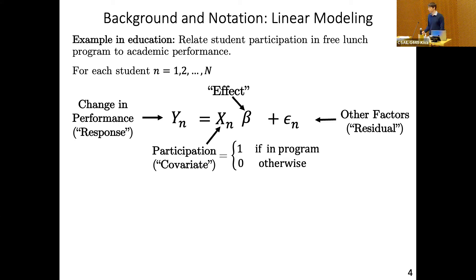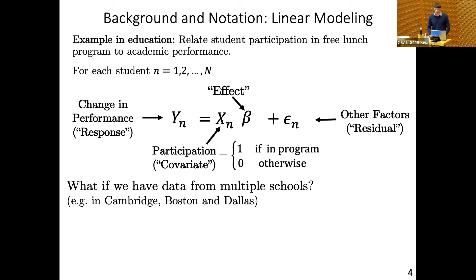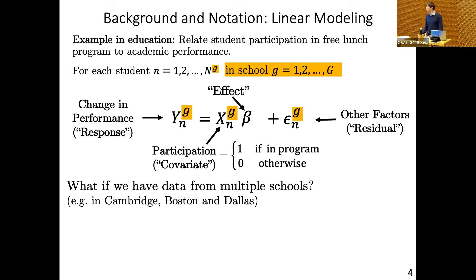What if we have data from multiple different schools? Say we have one school in Cambridge, another in Boston, a third in Dallas. We can incorporate that by adding notation to index the different schools — adding a G into the notation for school g going from one up to big G equals three in this case.